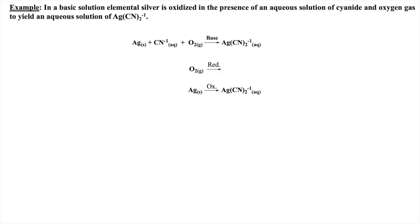First, the element being reduced — oxygen — needs to be balanced by adding water to the product side. Now we have to equate the number of hydrogens on both sides of the equation by adding the appropriate number of protons to the reactant side. At this point, we calculate the overall charge on both sides. The only way to make these charges balanced is to add four electrons to the reactant side.